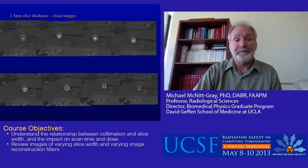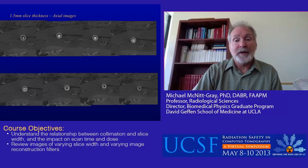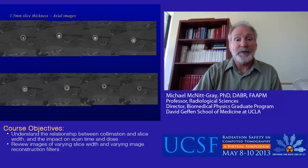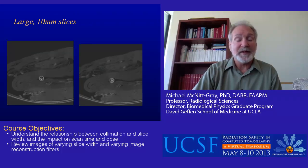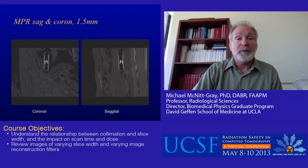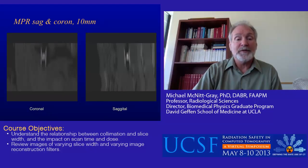Another example uses a physical device — a bronchial valve used in treatment of emphysema — scanned under different conditions. Cross-sectional images at 1.5 millimeter thick show clear detail of the valve. The same object reconstructed at 10 millimeter thick slices is much less detailed. In multiplanar sagittal and coronal reformats, the 1.5 millimeter source images reveal clear valve detail, while the 10 millimeter source images produce blurry reformats due to partial voluming. Thin slice acquisition before multiplanar reformatting is clearly superior.